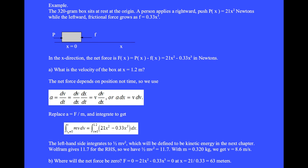In the x direction, the net force is f of x equals p of x minus the frictional force equals 21x squared minus 0.33x cubed in newtons. Question A. What is the velocity of the box at x equals 1.2 meters?